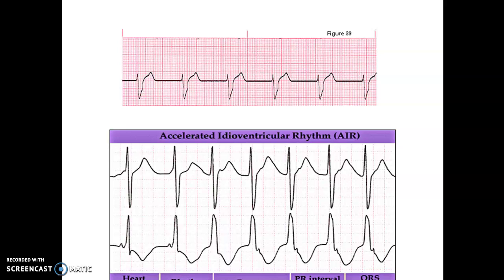When we talked about having a junctional rhythm with a bundle branch block, this gets really tricky. An accelerated junctional rhythm has a rate in the normal junctional range but just has a wide QRS. One of the things you need to ask yourself on a monitored floor — you get more than just a six-second strip. Did the patient have a bundle branch block before this started, and now it still looks exactly the same but they've lost the P wave? Then lean towards a junctional rhythm with a bundle branch block. But if there was no bundle branch block before and now they're in this rhythm, it's going to be idioventricular.